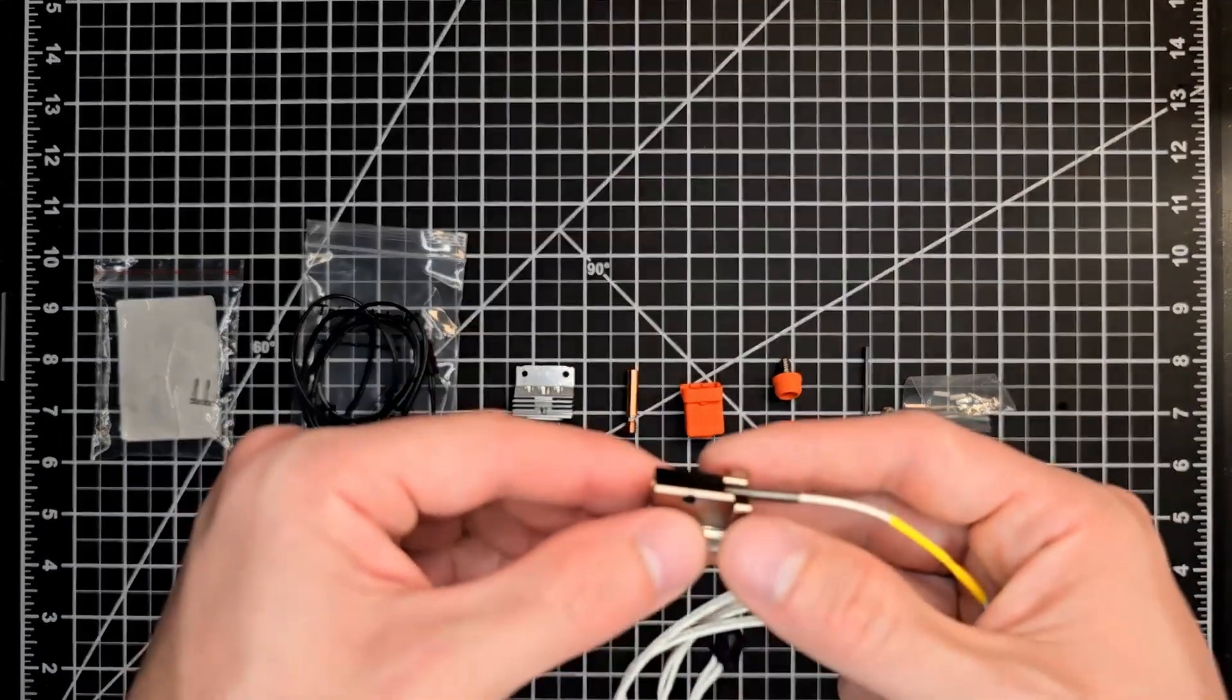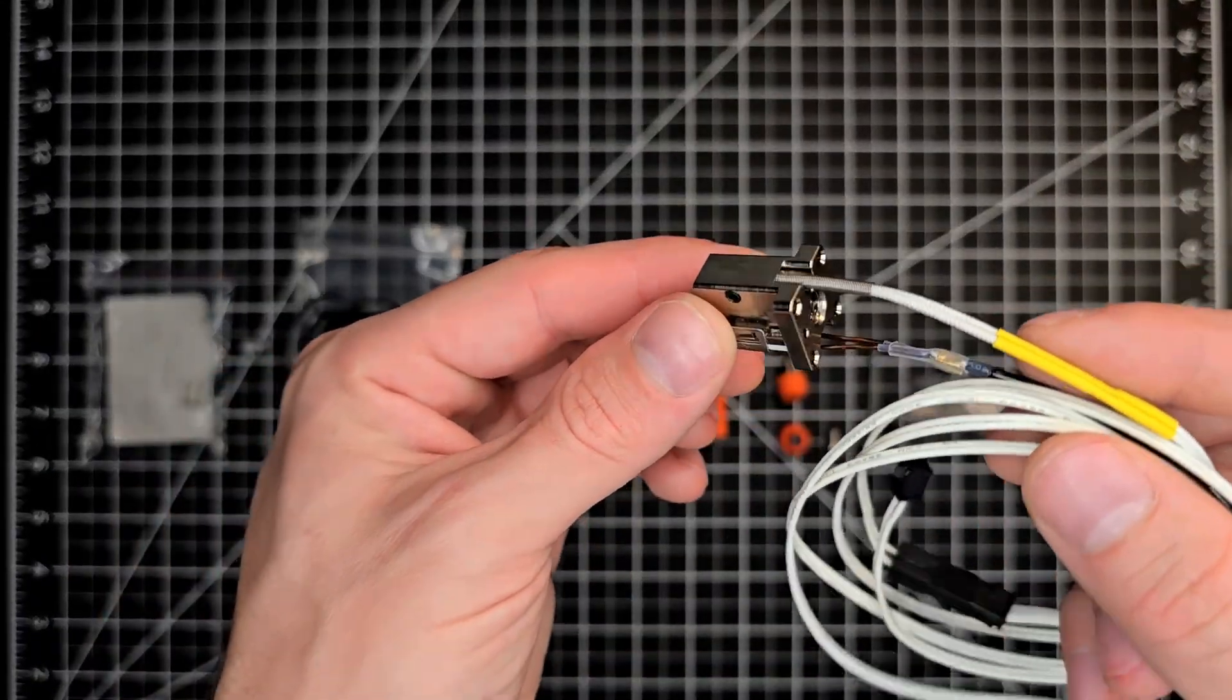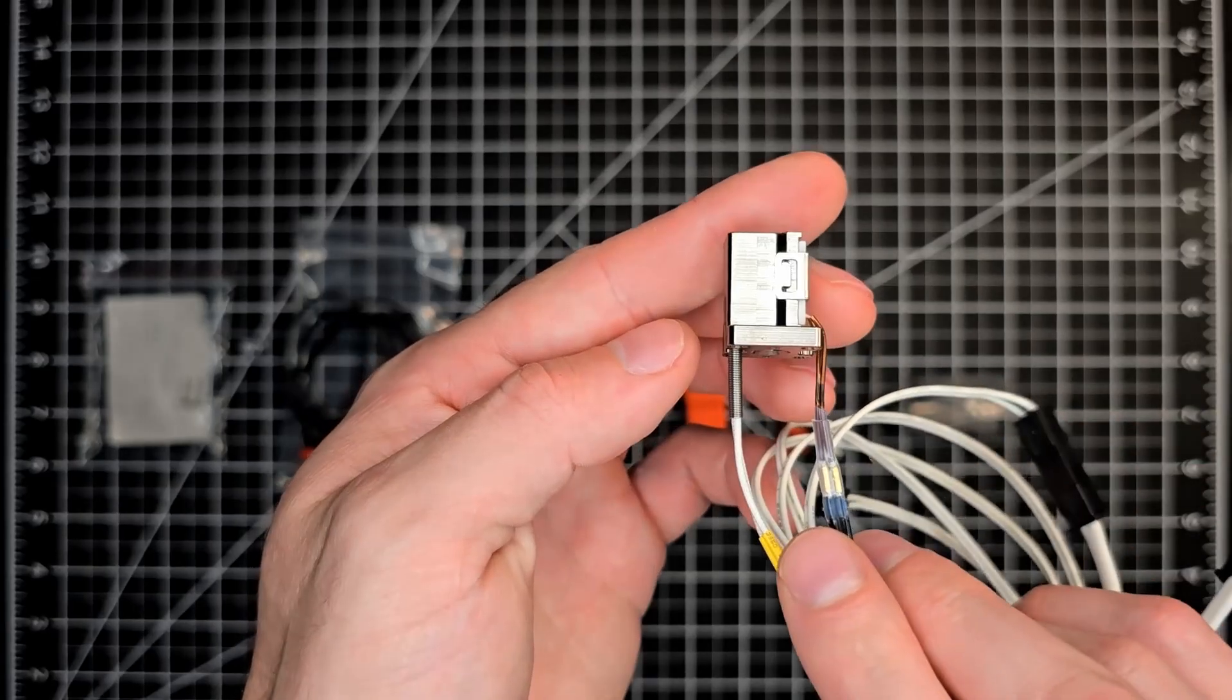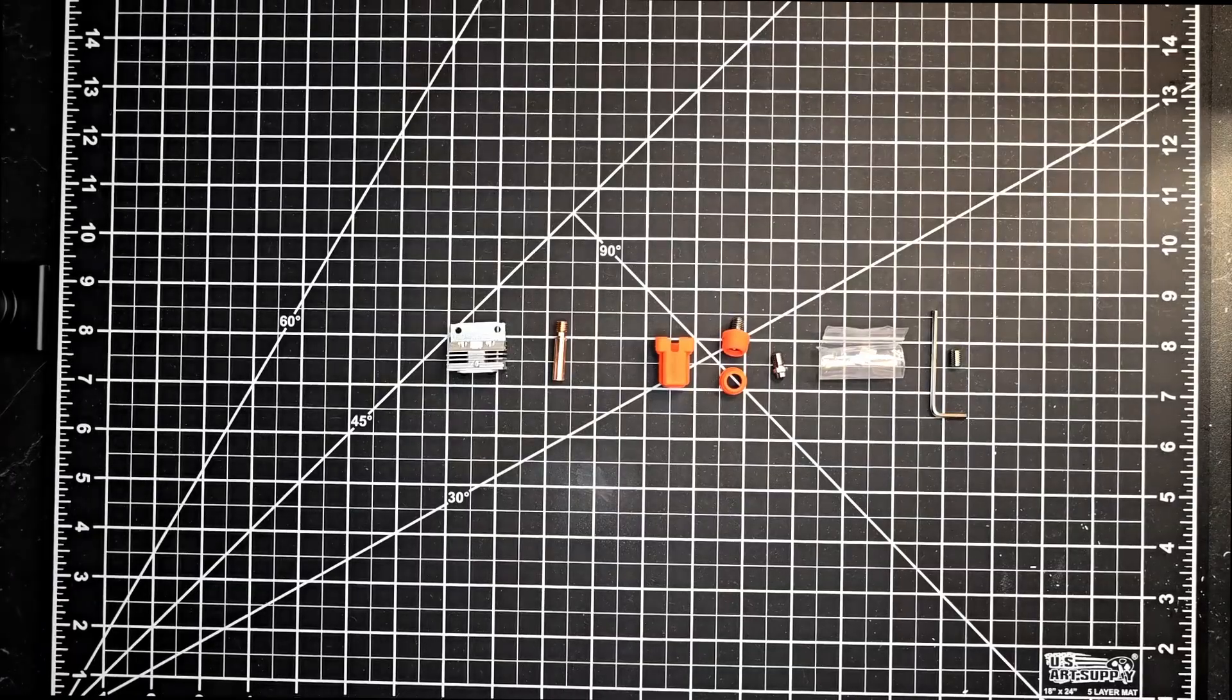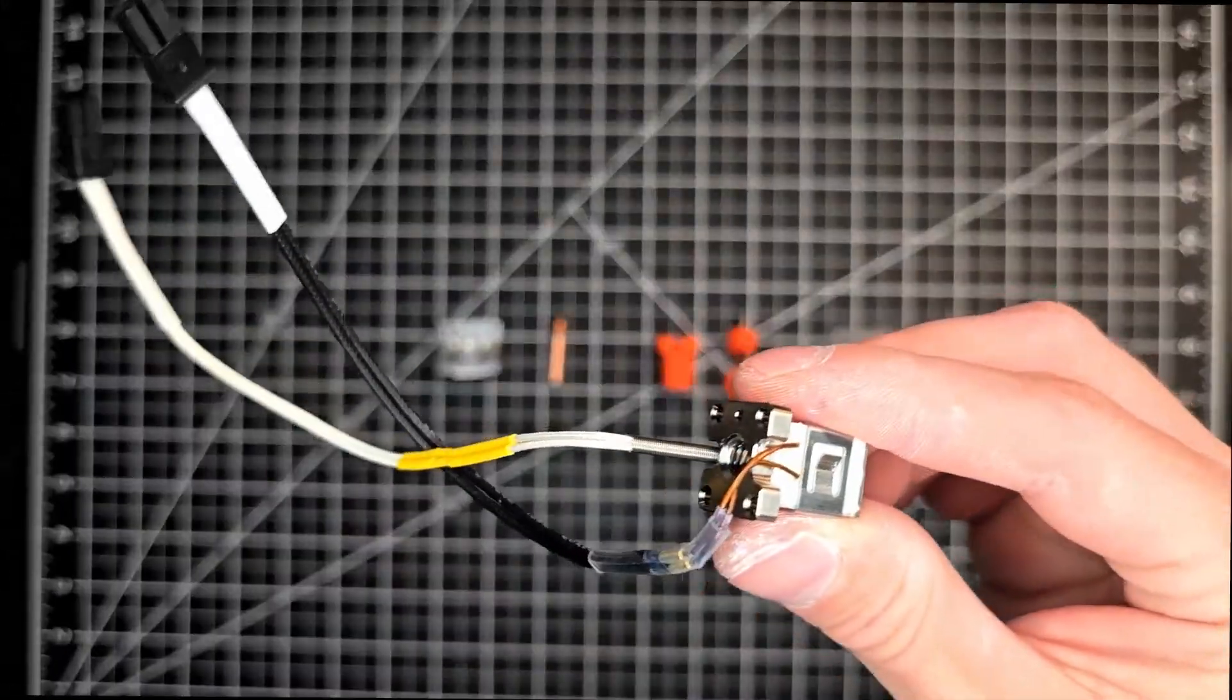Let's take a quick look at what we've completed so far. We're about halfway there. Looking good. The heater and thermistor installed on the heater block.